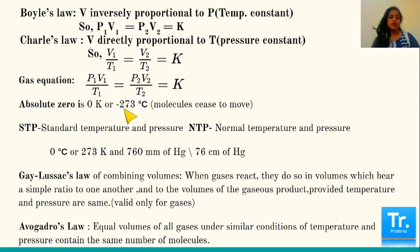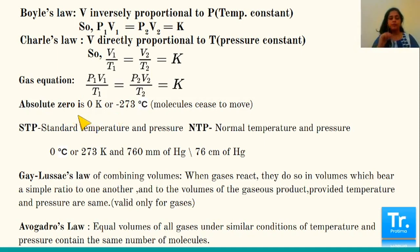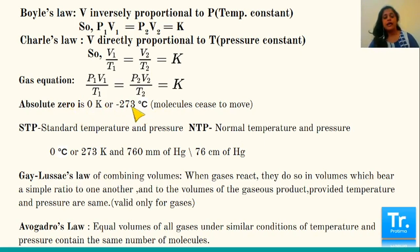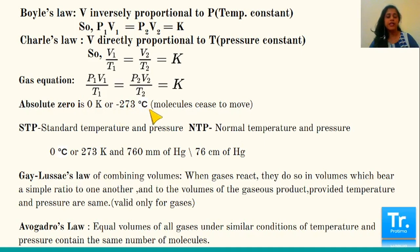We also know about absolute zero, which we covered last year. That is 0 Kelvin or minus 273 degrees Celsius — the temperature where molecules cease to move. Though difficult to attain, 0 Kelvin or minus 273 degrees Celsius does exist.